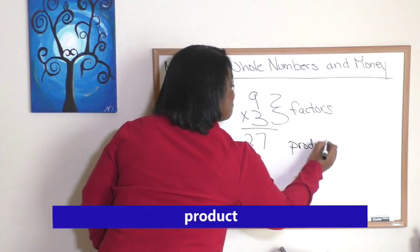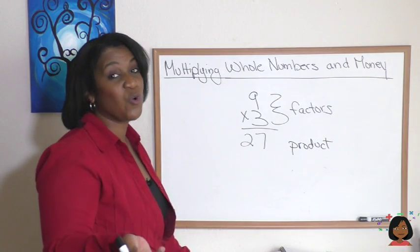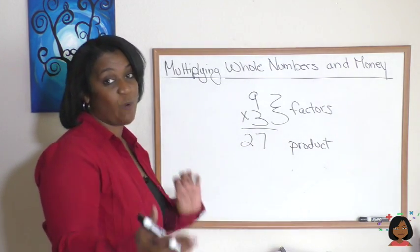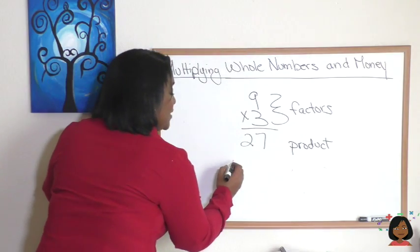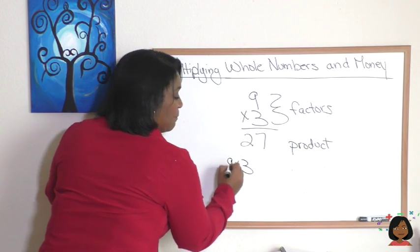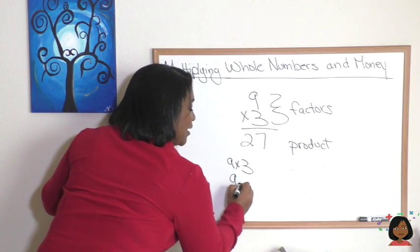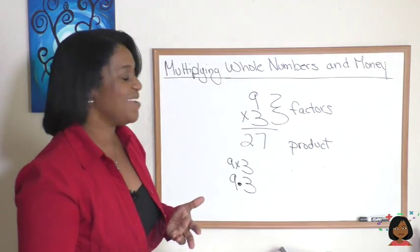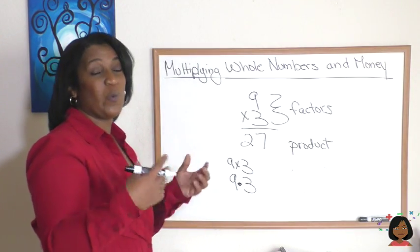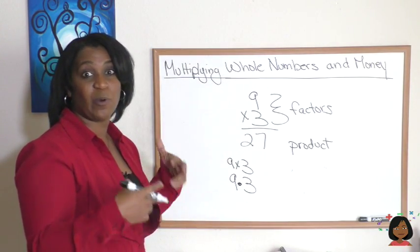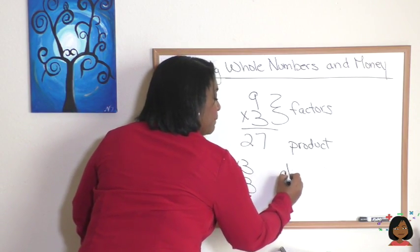One of the cool parts about multiplication is there are multiple ways to write it. You're probably familiar with this sign, right? Nine times three, that multiplication sign. But we also could use the dot: nine times three, just a dot instead. When we use variables in math, letters to represent numbers, we might say AB and put them next to each other, and we know that means multiply.